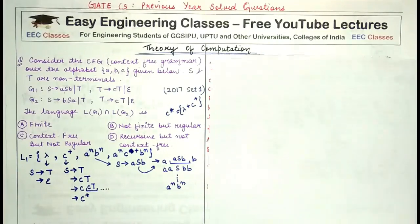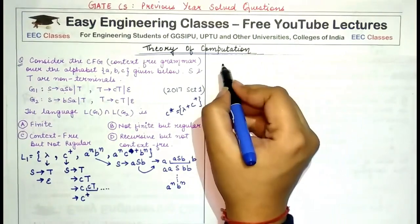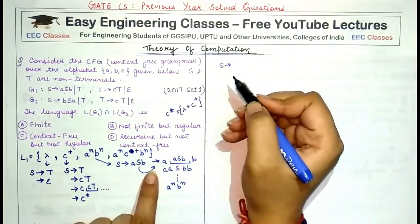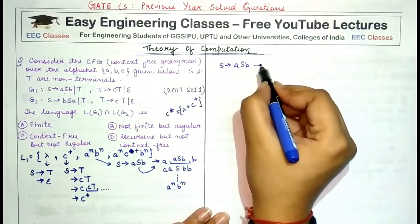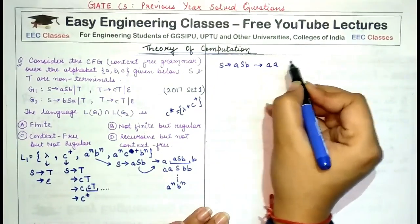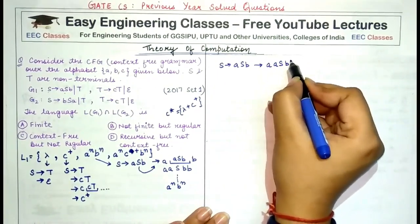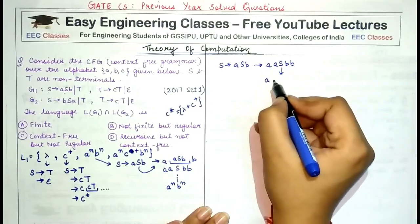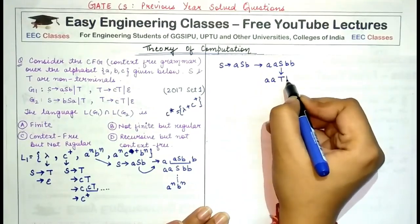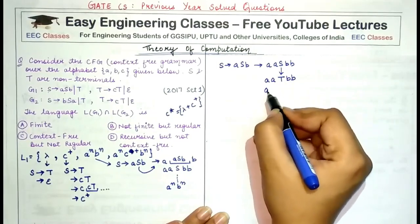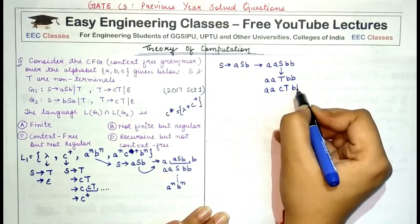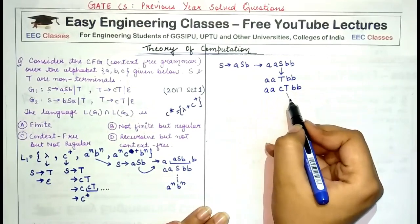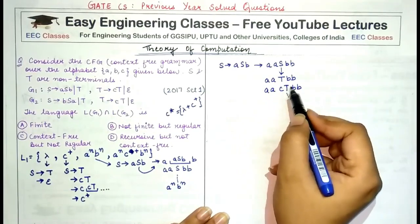Starting with S, I replace it with aSb, then replace S again with aSb, and now I replace this S with T — because I need to introduce a c here. This T is replaced by CT, followed by the double b.